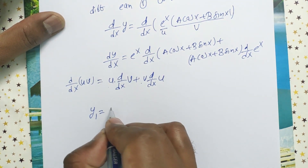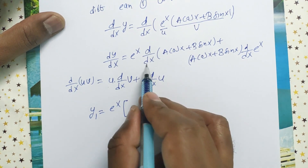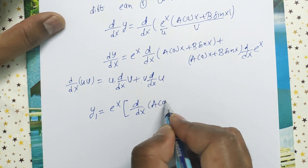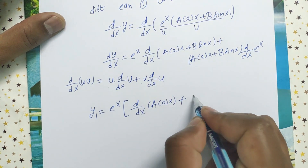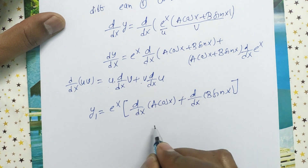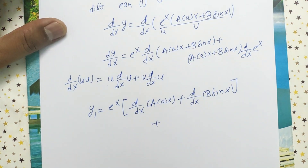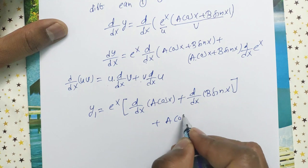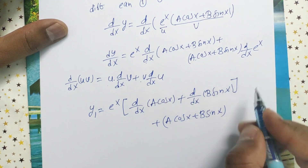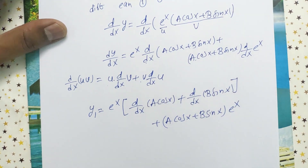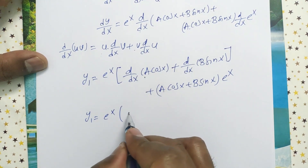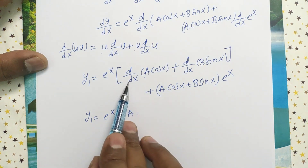So we can write dy/dx as y₁ equals eˣ · d/dx(a cos x) + d/dx(b sin x), plus (a cos x + b sin x) · d/dx(eˣ), which is eˣ. Here a is a constant, so we have a · d/dx(cos x) and b · d/dx(sin x).